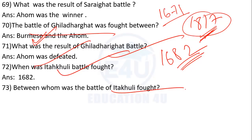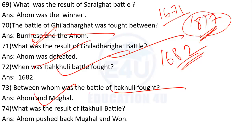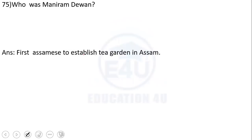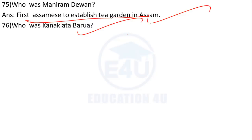At the Battle of Itakhuli 1682, the Ahoms pushed back the Mughals. In the Battle of Alaboi, the Ahoms suffered a defeat. Moniram Dewan was the first person to establish a tea garden in Assam.